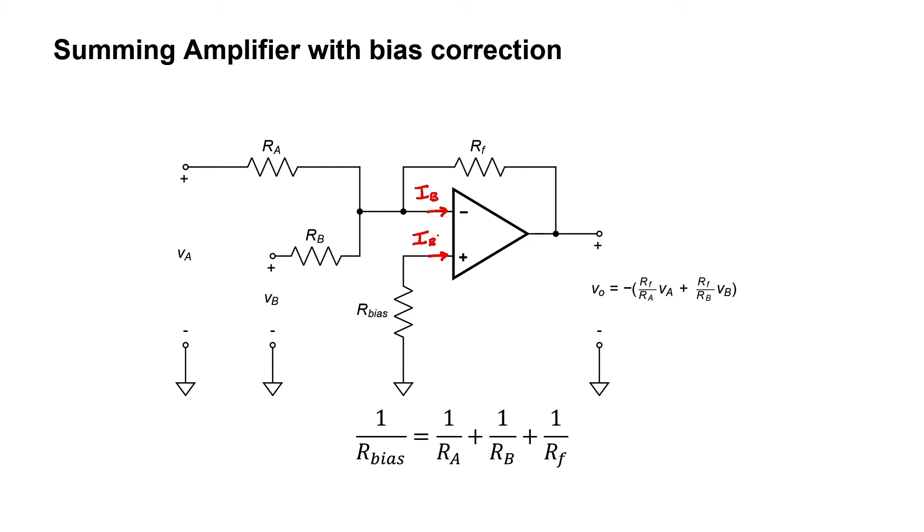In the last circuit, I effectively assumed that this bias current I sub B equals zero. That's a reasonable approximation if your input signals are not too small. But if your input signals to be amplified, or summed in this case, are not really very large, then you might want to make this correction.